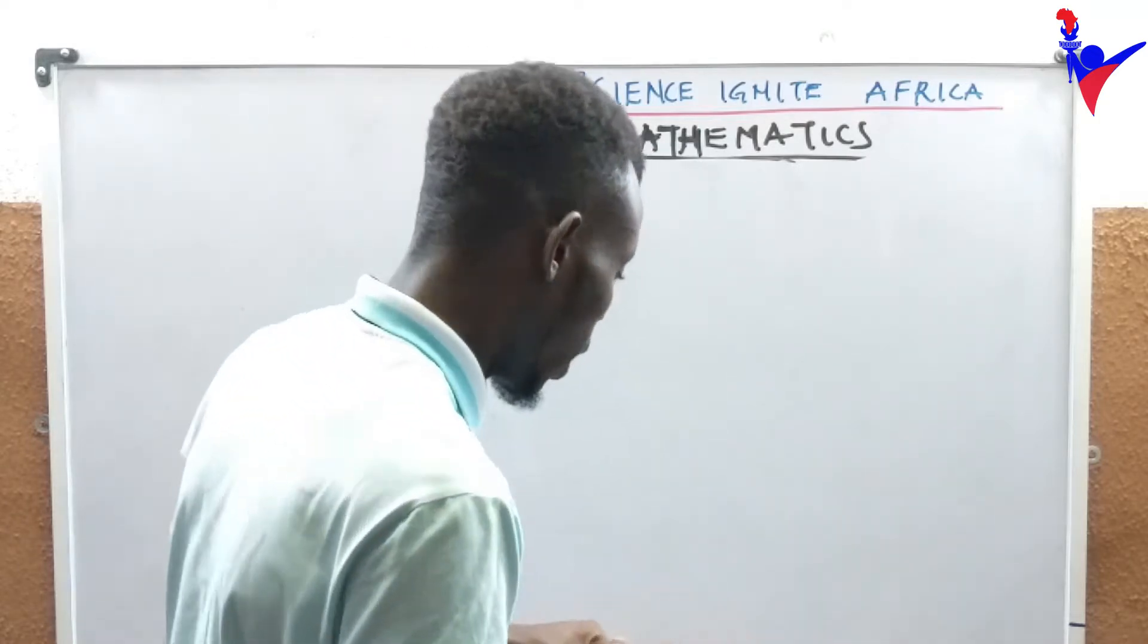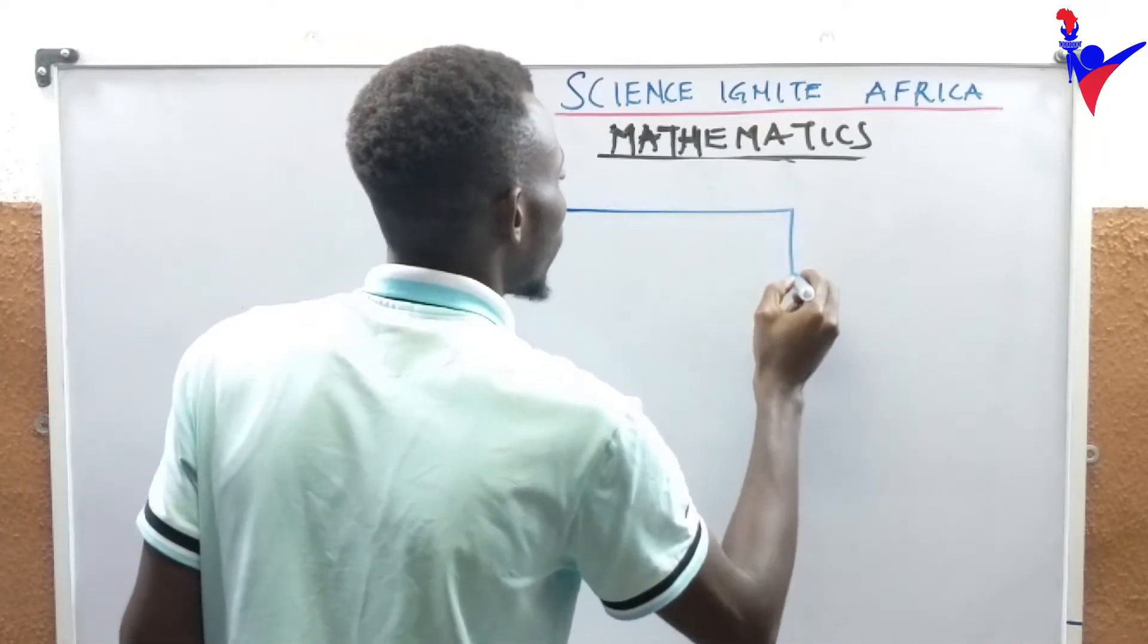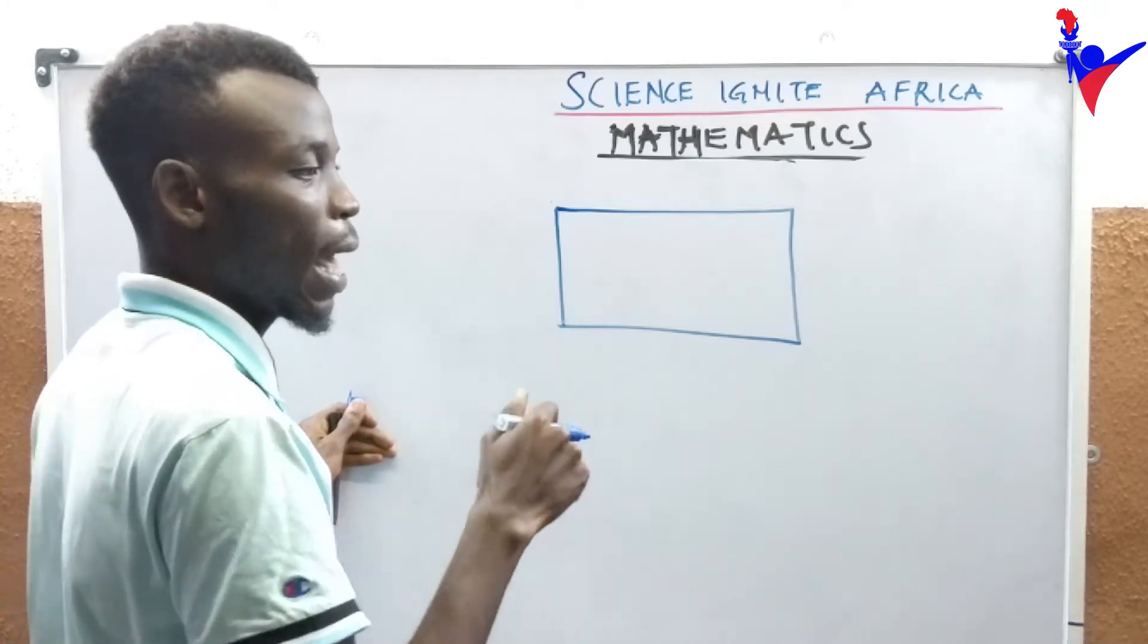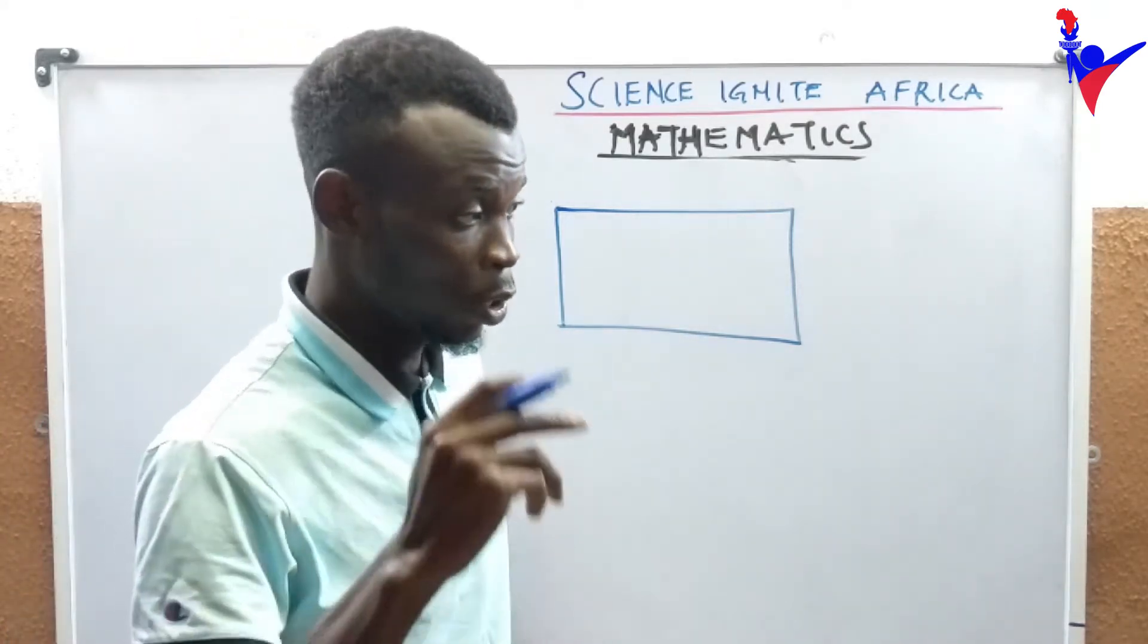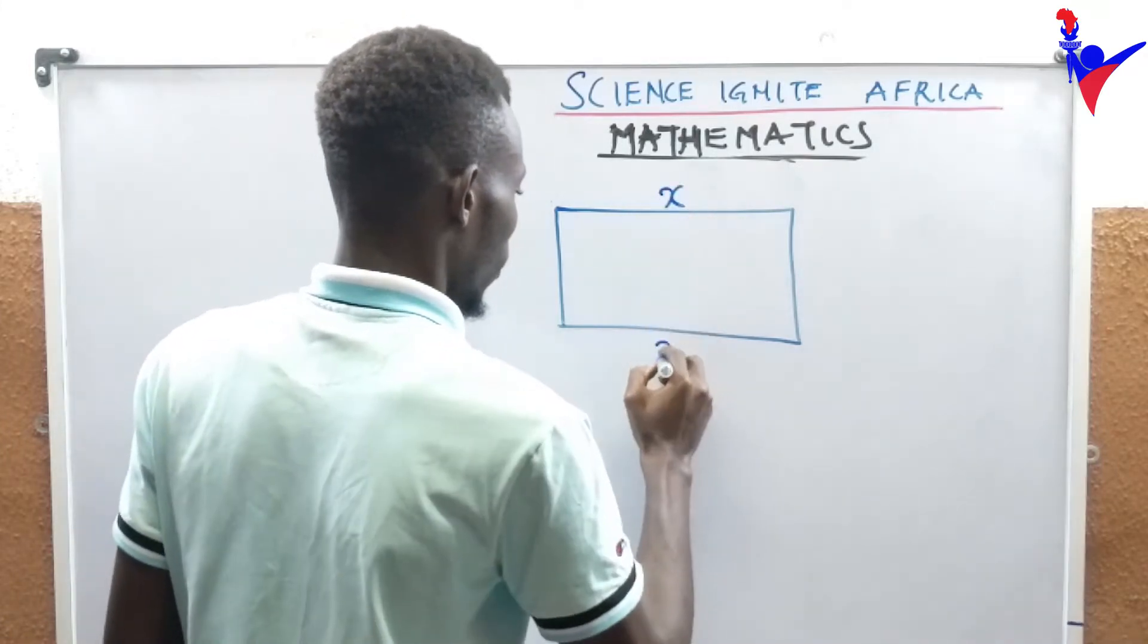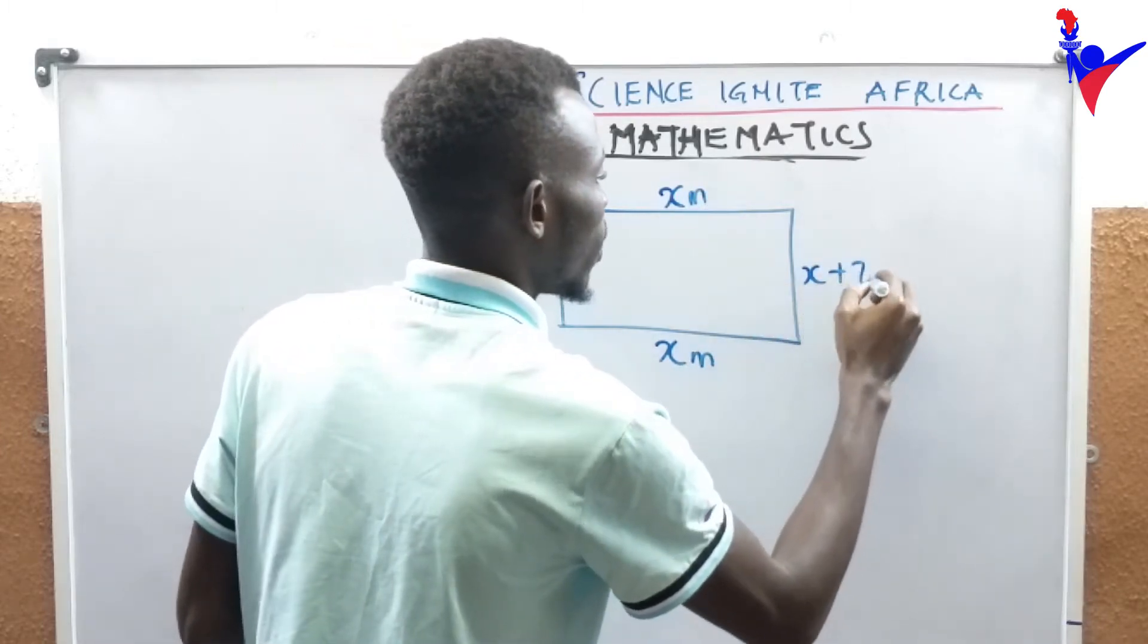Let me draw the shape of a rectangle. A rectangle has length times breadth. The length is x meters, and we have x plus 7.